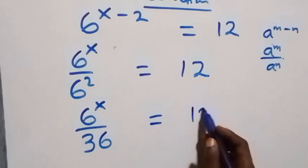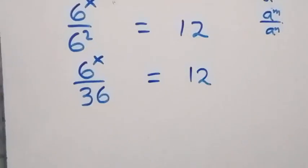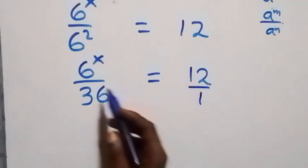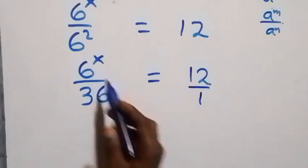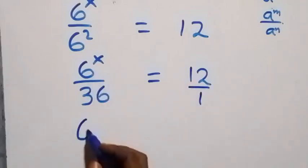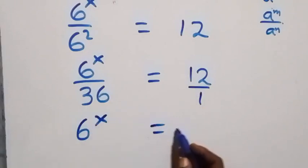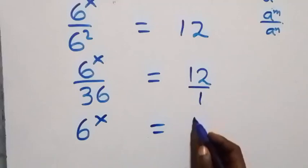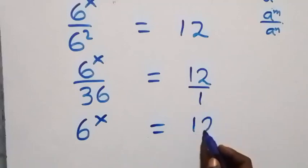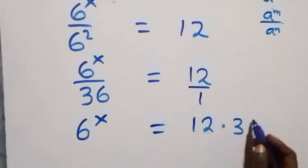From here we have 12 over 1, and we can cross multiply: 6 raised to power x times 1 plus 6 raised to power x, equals 12 multiplied by 36.